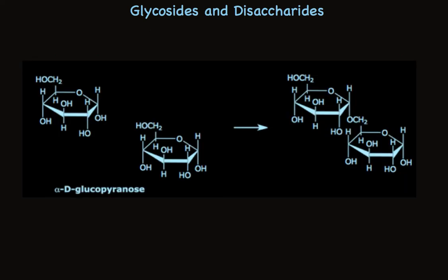On the left, we have two molecules of the very same thing, alpha-D-glucopyranose. This hydroxyl group can be replaced by one of the hydroxyl groups on the other sugar. I've chosen the hydroxyl group on the hydroxymethylene. This hydroxyl will replace this one. And here it is.